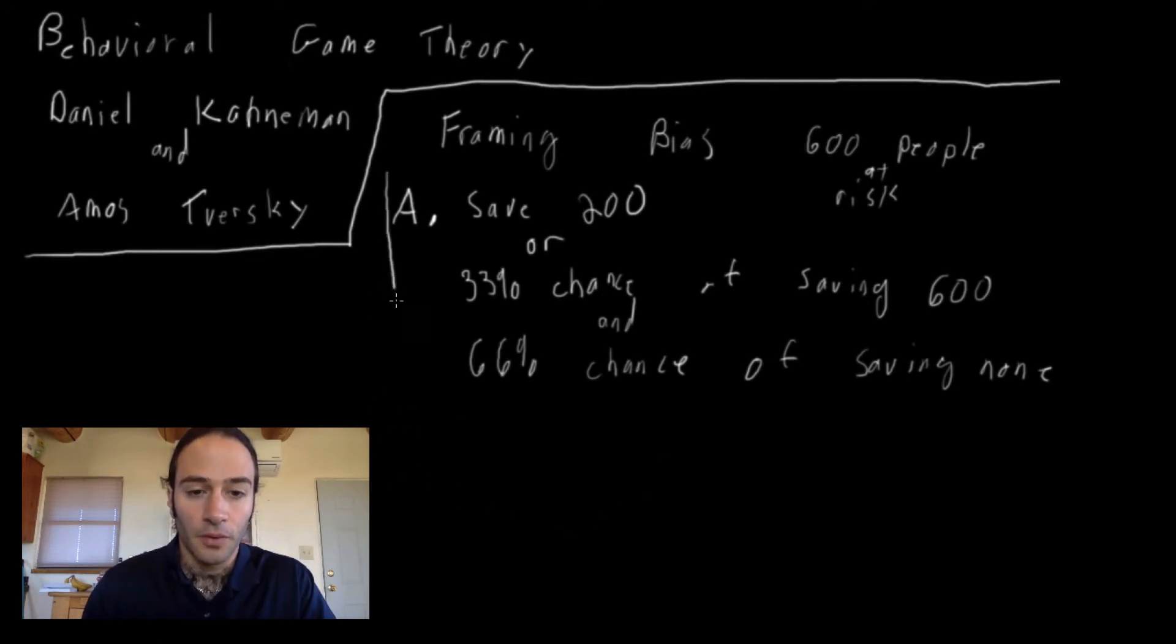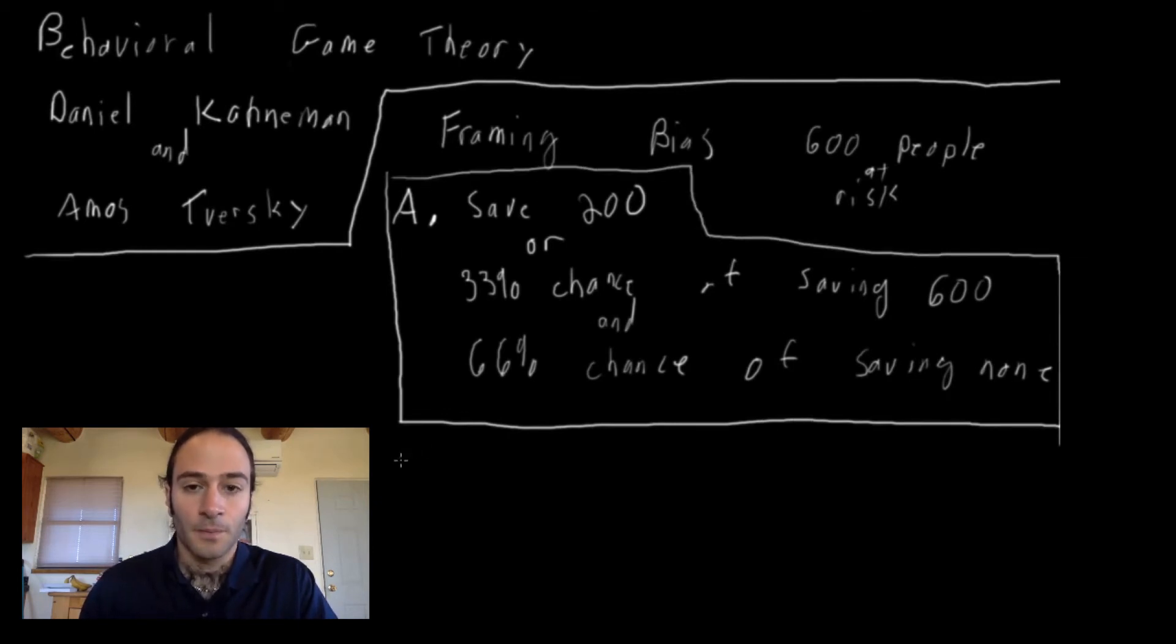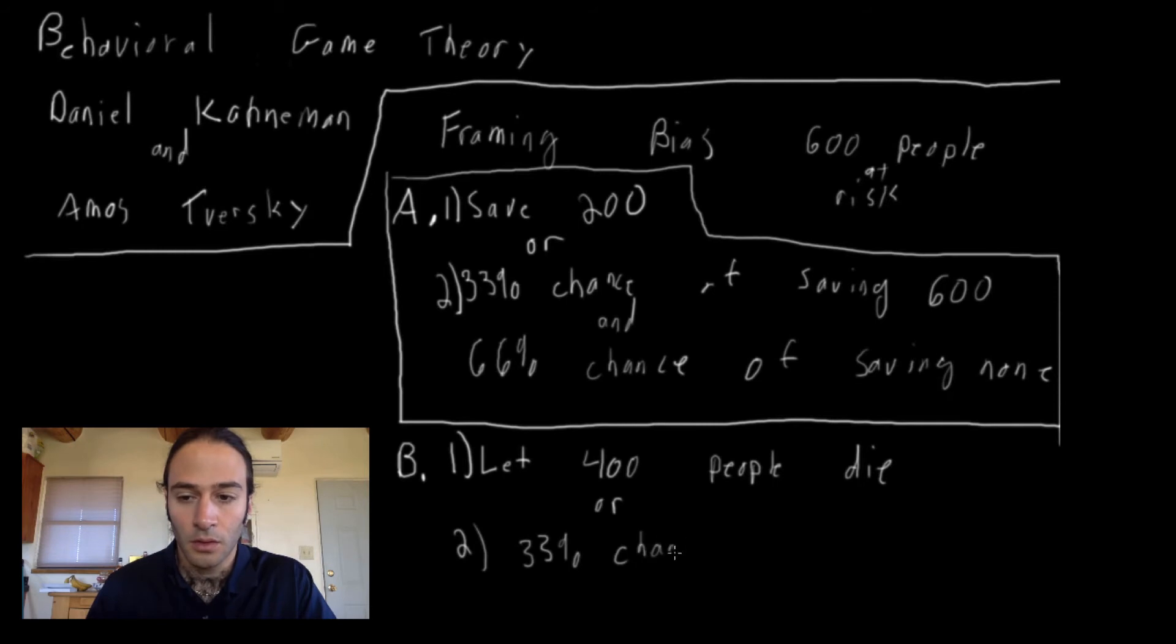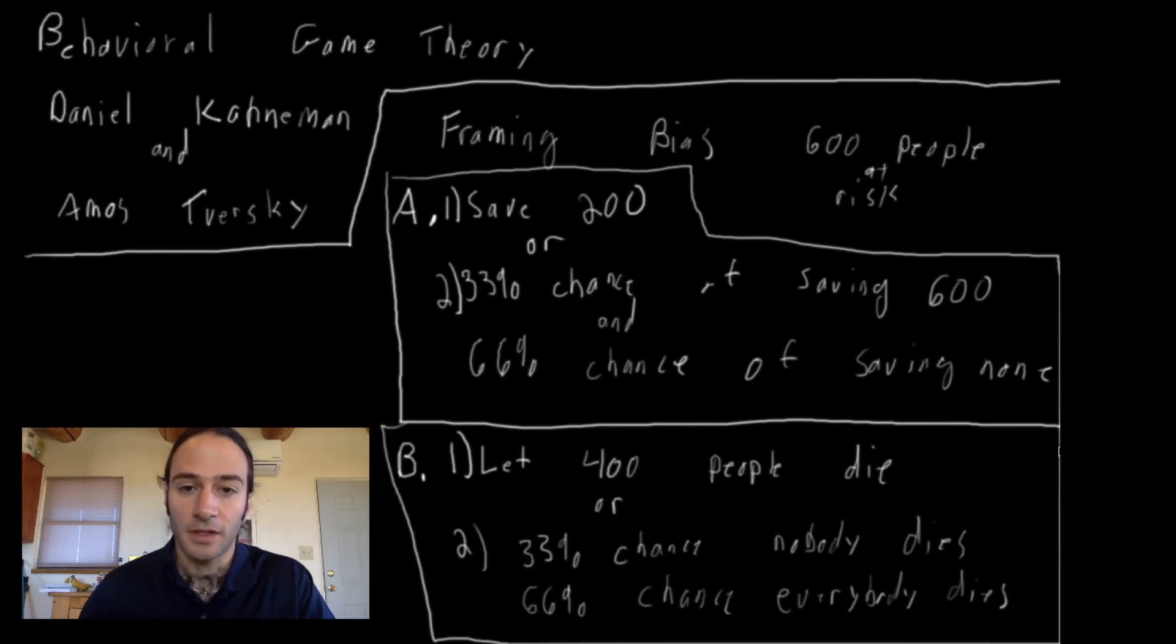Another group had this decision problem. So they were given the options, let 400 people die or 33% chance no one dies and 66% chance everybody dies.